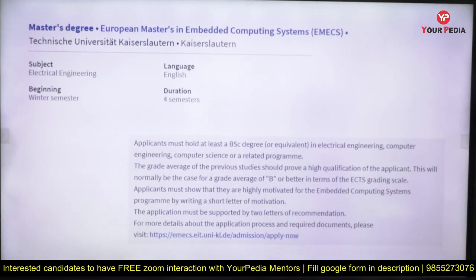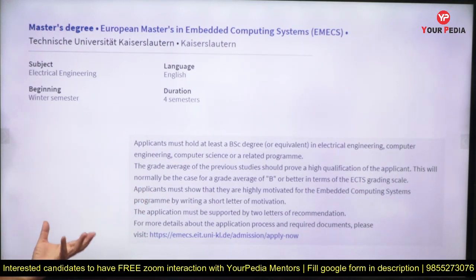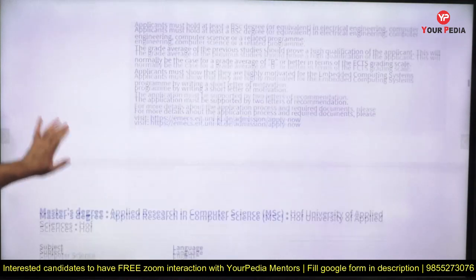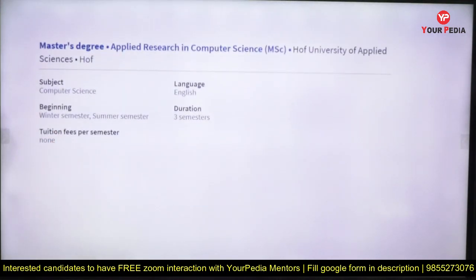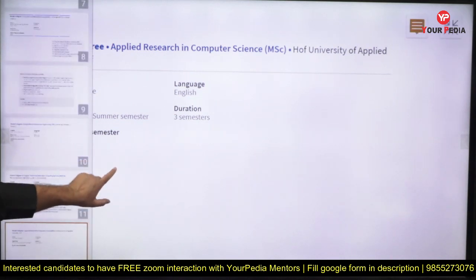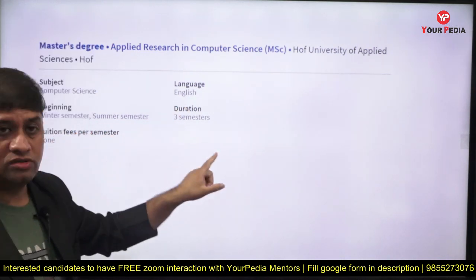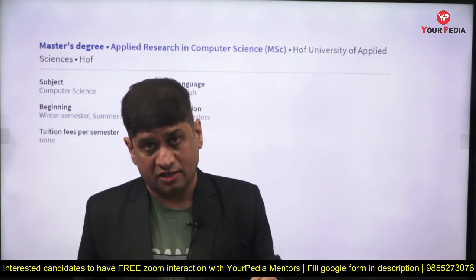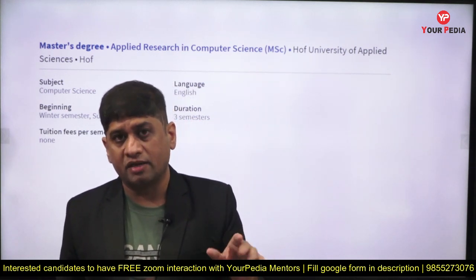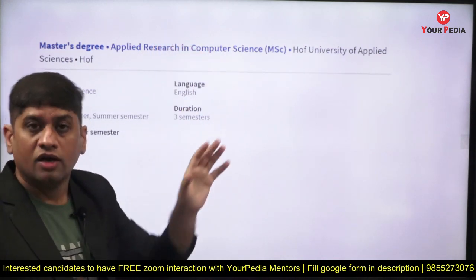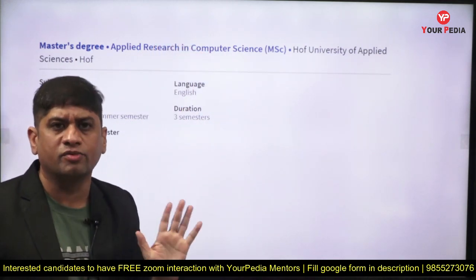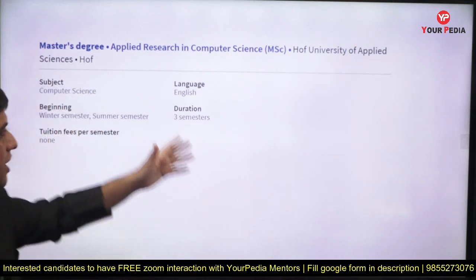Embedded Computing Systems is good for electrical engineering students who want to enter the computer science domain. Applied Research in Computer Science — MSc — is a three-semester course. The advantage of a three-semester course is lower overall expenditure. After three semesters in computer science, you will get a very good job. Minimum investment — give your hundred percent for three semesters and you'll land a great job.